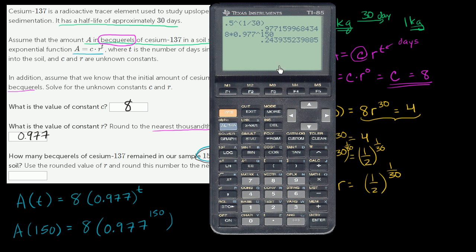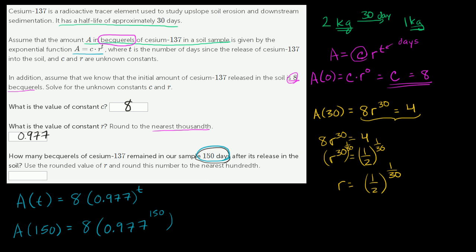And that gets us, and they want us to round to the nearest hundredth, so that's 0.24, 0.24 becquerels, is the radioactivity level of the cesium-137 that we have left over.